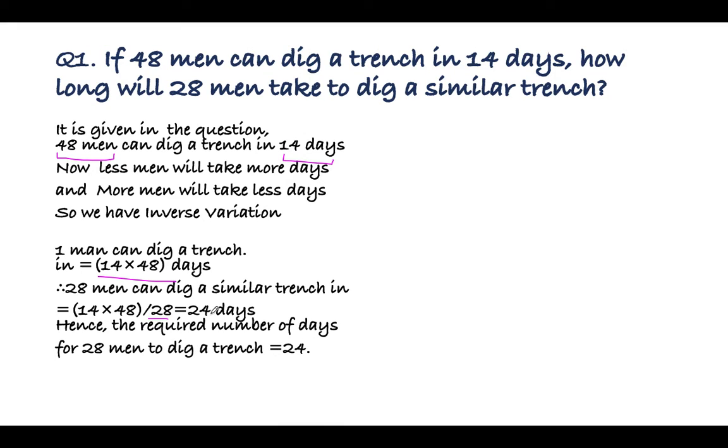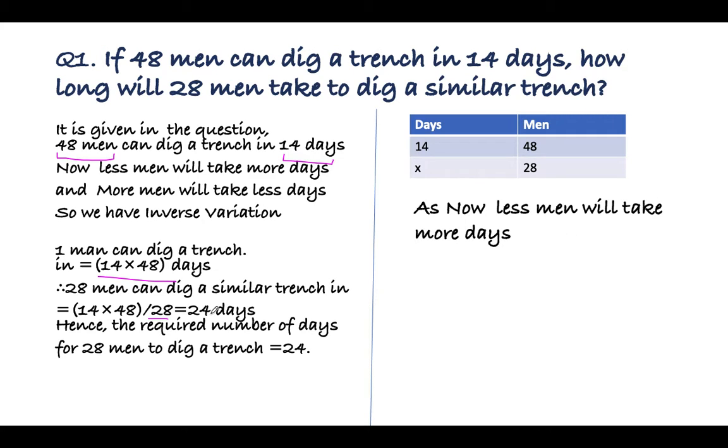The total required number of days is 28. Now we can do this question by drawing the table also. You can draw a table like this between the days and men. Again, you have to write whether it is direct variation or inverse variation.